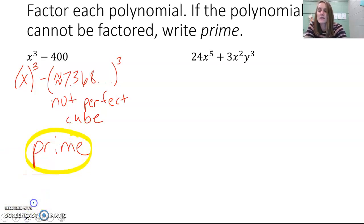Now, if we try the second one, 24x to the fifth plus 3x squared y cubed, you might look at it and be like, well, it's not a sum of cubes or a difference of cubes. You can't group it. It's not a quadratic. But it does have a GCF. That should be the first thing that you look for no matter what when you're factoring. 24 and 3 both have 3 in common. So I can factor that out. And if we look at the variables, they also have some x's in common. They specifically have 2 x's in common or x squared.